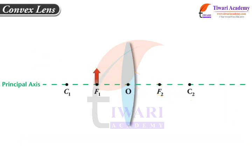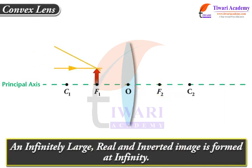An infinitely large, real and inverted image is formed at infinity when the object is placed at principal focus F1 of a convex lens.